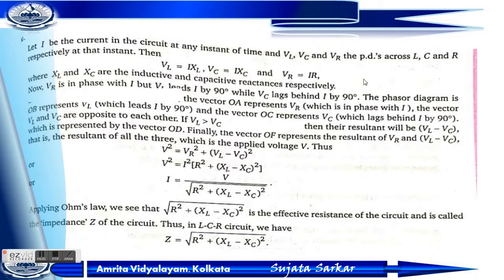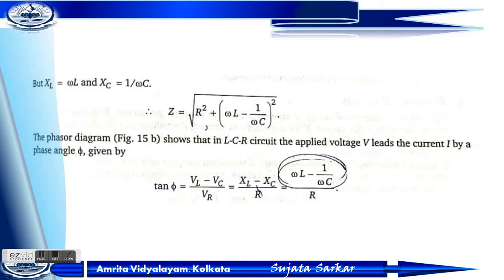Substituting VR equals IR, VL equals IXL, and VC equals IXC, we get V squared equals I squared into R squared plus (XL minus XC) squared. Therefore, the current I equals V divided by root over R squared plus (XL minus XC) squared. Applying Ohm's law, the effective resistance is called impedance: Z equals root over R squared plus (XL minus XC) squared. Substituting XL equals omega L and XC equals 1 by omega C gives Z equals root over R squared plus (omega L minus 1 by omega C) squared.